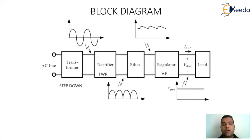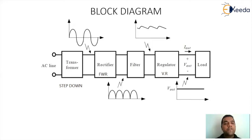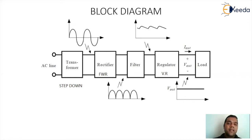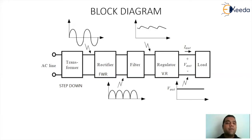Here is the block diagram of a basic power supply section. You can see an AC input line of 230 volt 50 hertz standard value. That energy is given to a transformer — the transformer has to be a step-down type. DC power supplies generate a DC signal of very small value, maybe 5 volt, 10 volt, 15 volt, or 30 volt, depending on the design of the power supply.